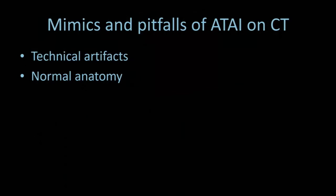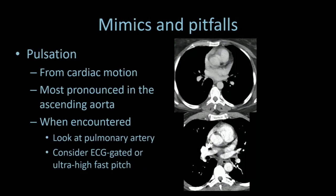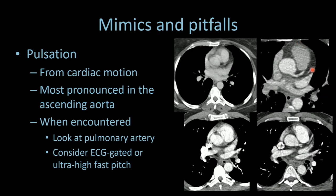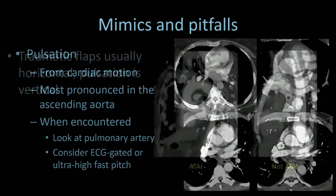Let's finish by talking about mimics and pitfalls, broadly divided into technical artifacts and normal anatomy. The biggest one is pulsation, typically from cardiac motion, most pronounced in the ascending aorta. When you encounter it, look at the pulmonary artery. If it's overlapping with the pulmonary artery, that's probably an artifact. If you're unsure, consider electrocardiographic gating or ultra-fast high-pitch mode.